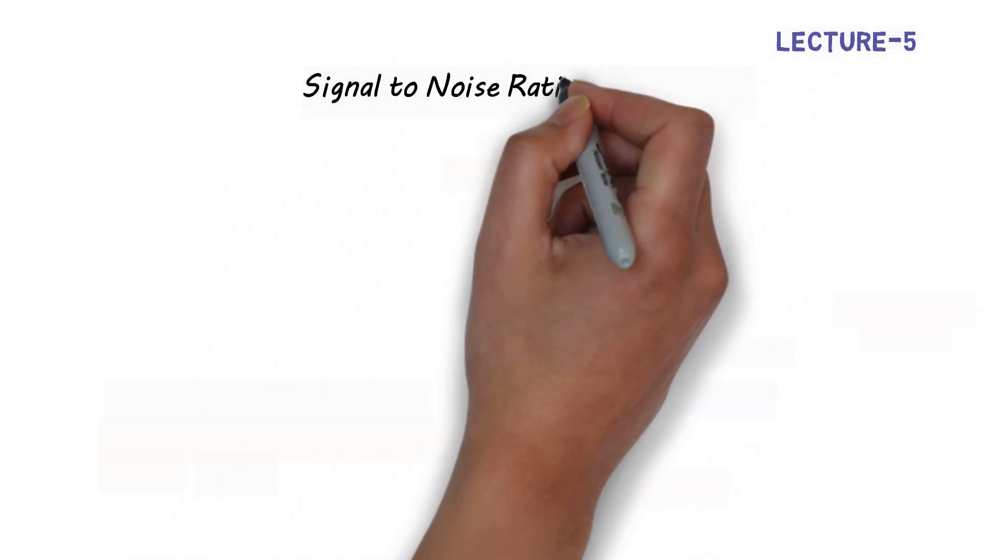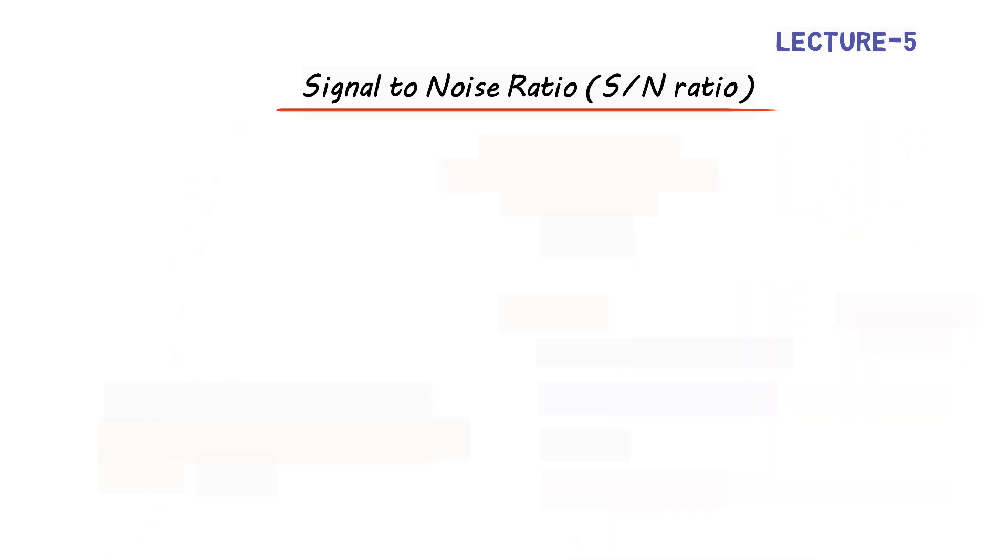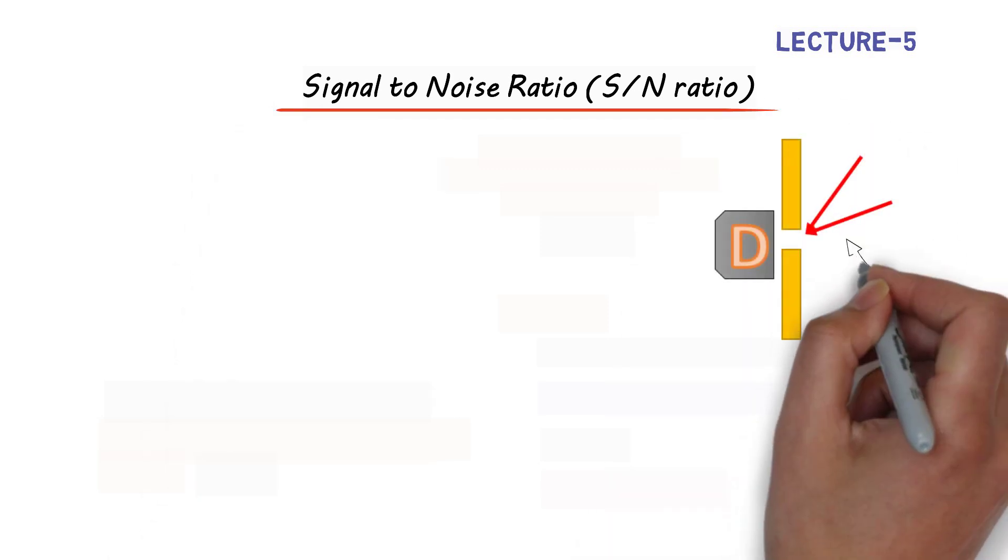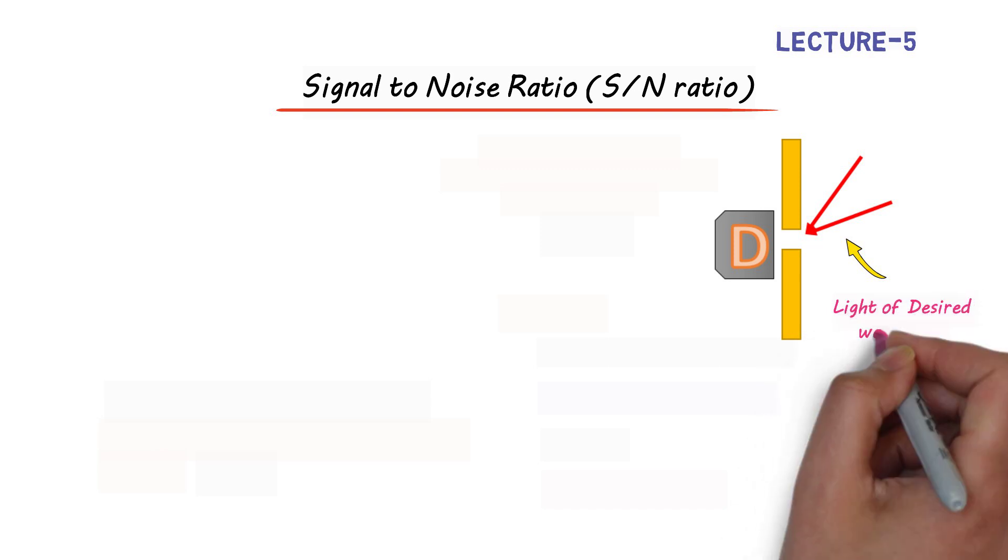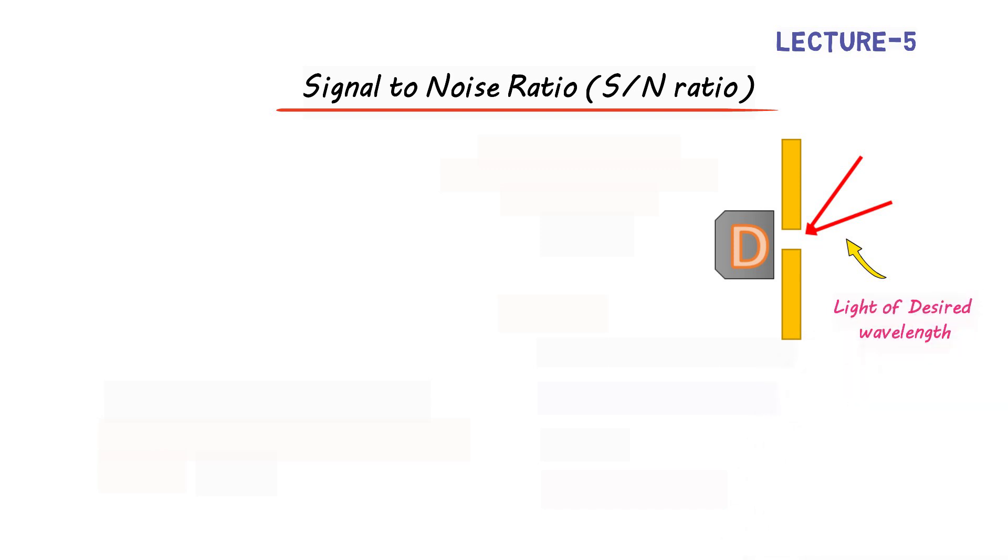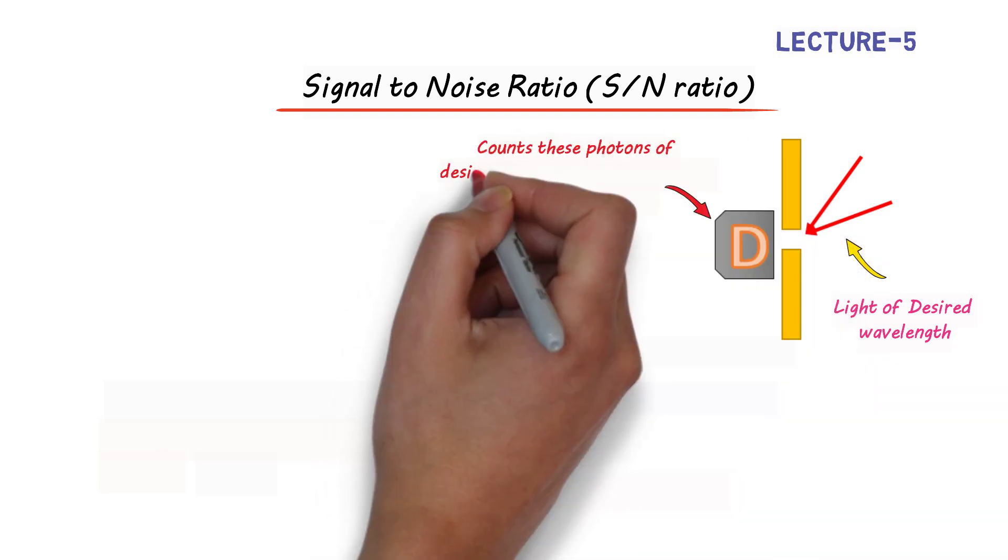Hello dear students, in this lecture we will talk about signal to noise ratio. As we know, light of desired wavelengths from the diffraction grating passes through the exit slit onto the detector. The detector counts these photons of desired wavelengths.